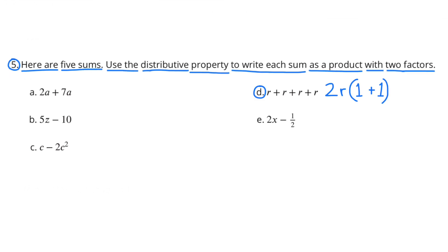D. R plus R plus R plus R — I pulled out 2R as the common factor with (1 plus 1) on the inside of the parentheses: 2R times (1 plus 1). Because 2R times 1 is 2R, and 2R times the other 1 is 2R, so 2R plus 2R equals 4R. There are a variety of ways to set this one up.